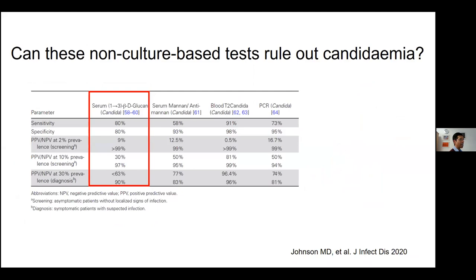How useful is the beta-glucan assay to rule out candidemia? Sensitivity and specificity are around 80%. As expected, the positive predictive value increases with increasing prevalence: at 2% prevalence the PPV is 9%, but at 30% prevalence it may be as high as 60%. The negative predictive value decreases only modestly with increasing prevalence. So it's a much better rule-out test than a rule-in test, though its PPV does improve in higher-prevalence settings.